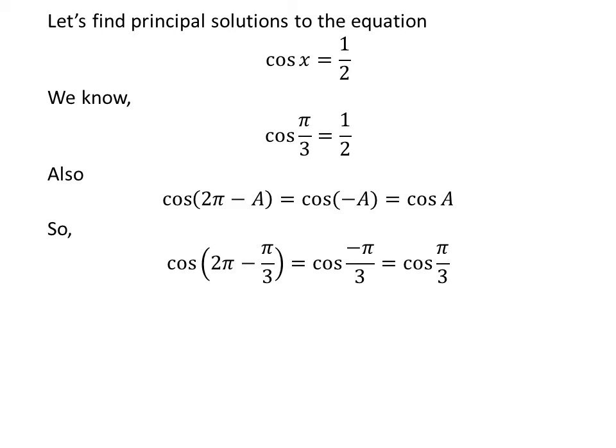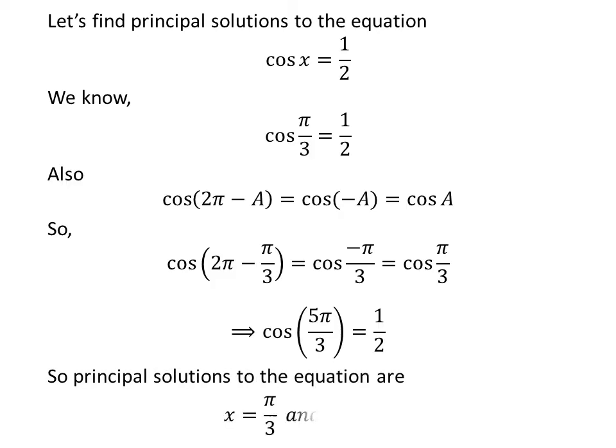Applying the above identity, cosine of two times pi minus pi upon three is equal to half. Since two times pi minus pi upon three equals five times pi upon three, cosine of five times pi upon three is equal to half. So the principal solutions to the equation cosine of x equals half are pi upon three and five times pi upon three.